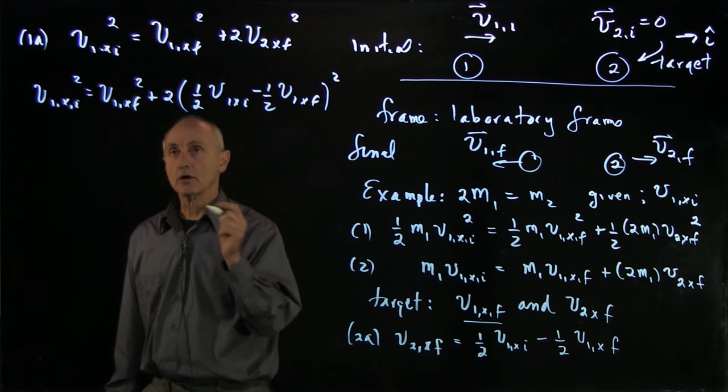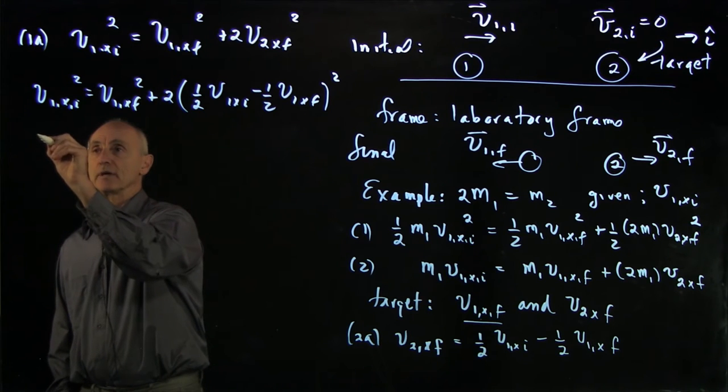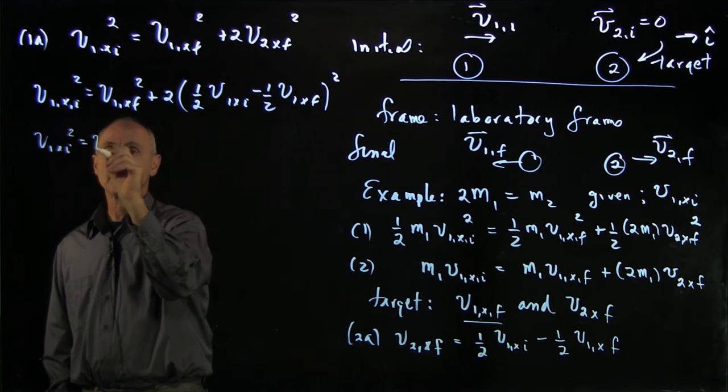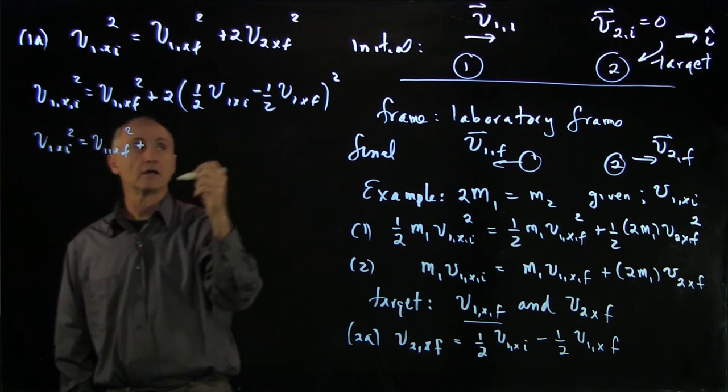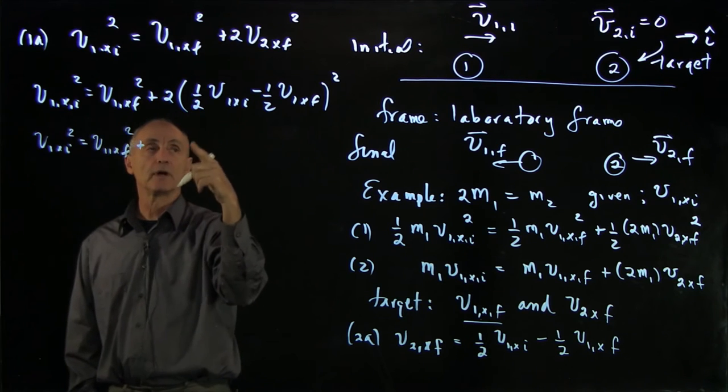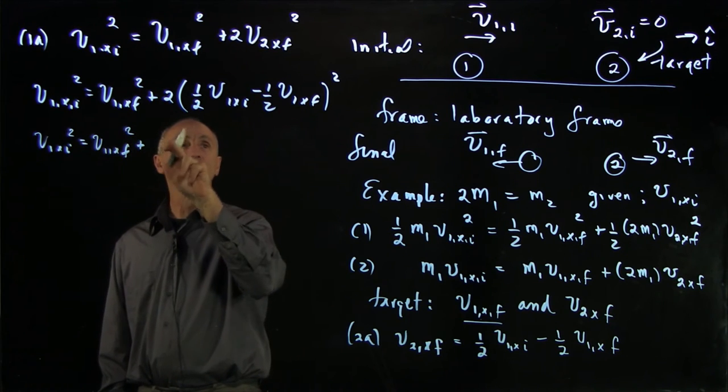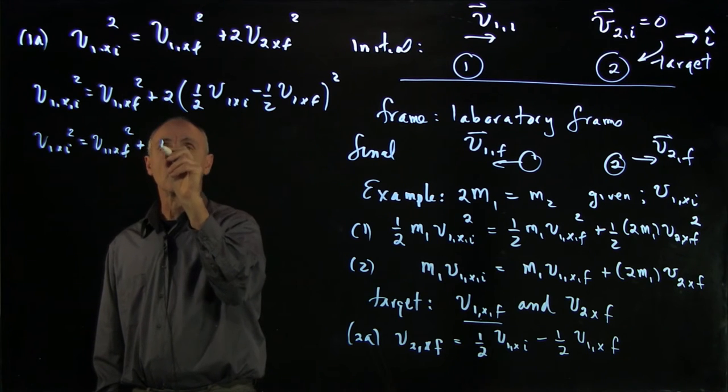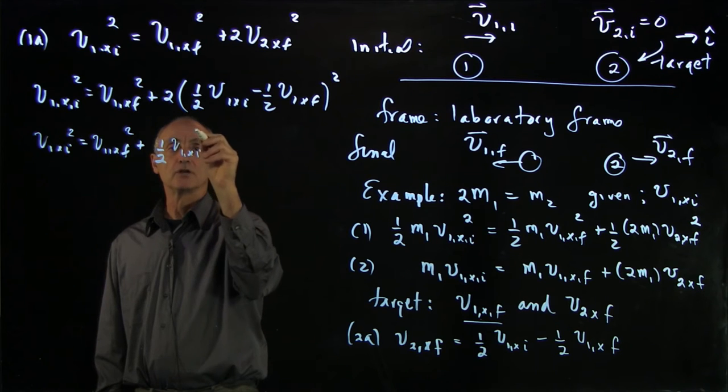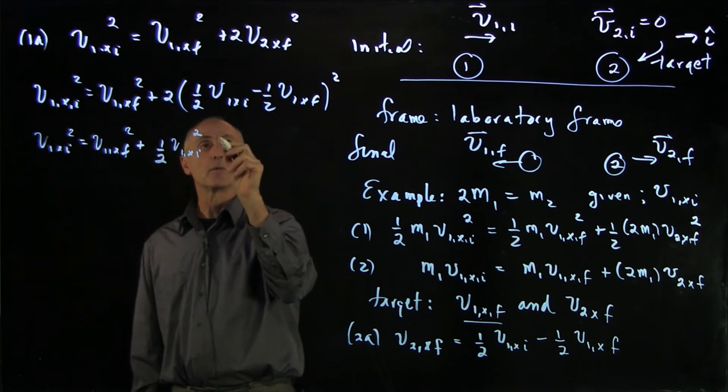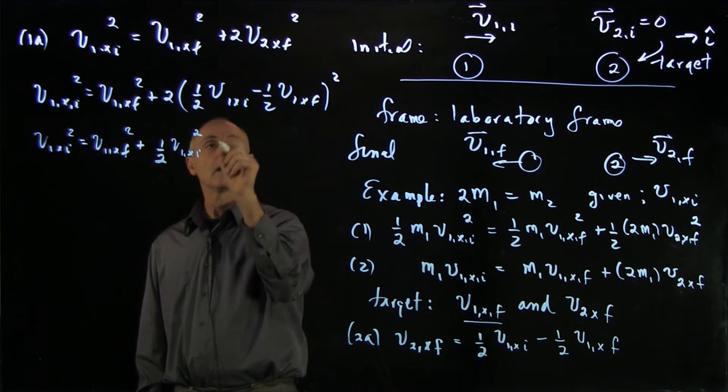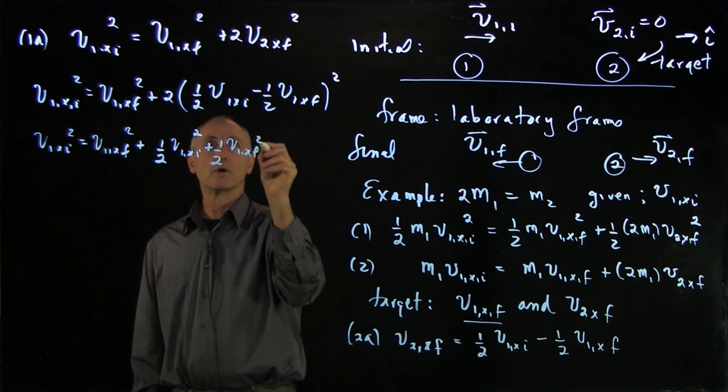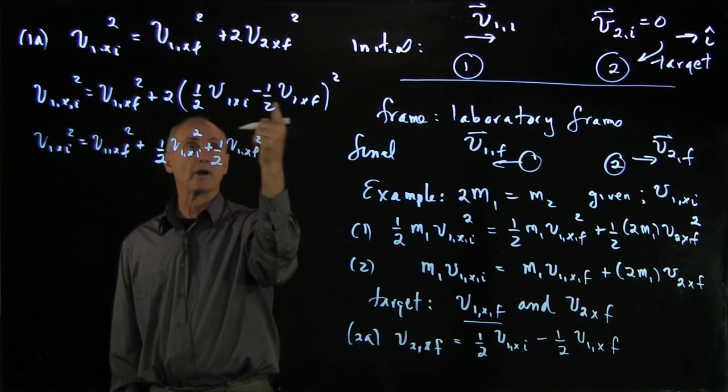Let's now expand this. We have to be careful not to make any mistakes. v1x initial squared equals v1x final squared. Now, if I pull the 2 out, I get a quarter in front and divide that by a half. So I get 1/2 v1x initial squared plus another 1 plus a 1/2 v1x final squared.